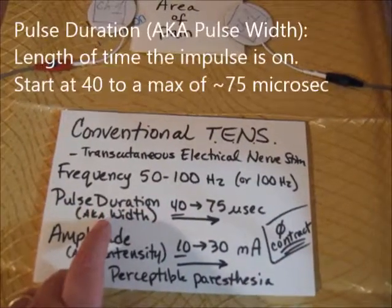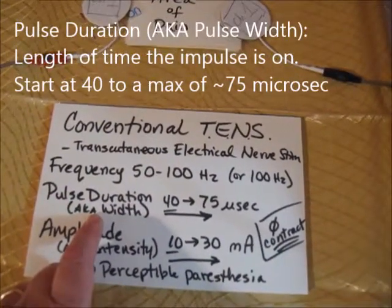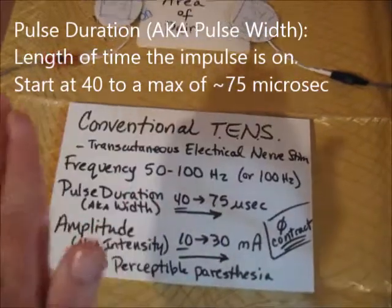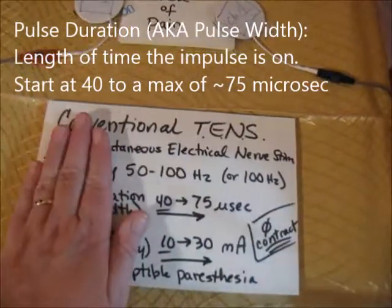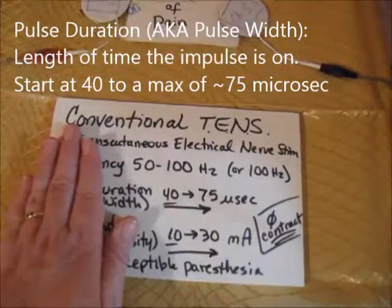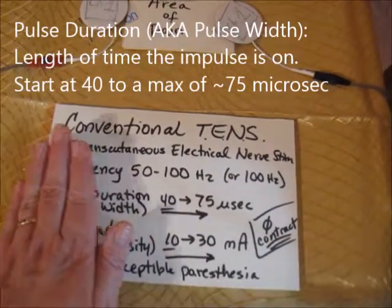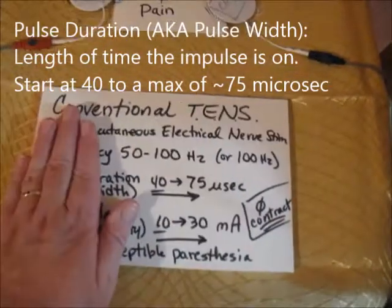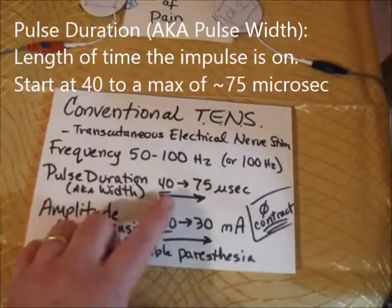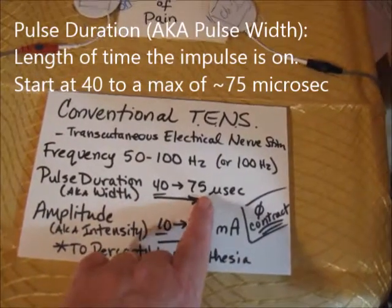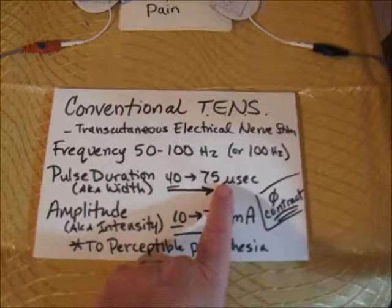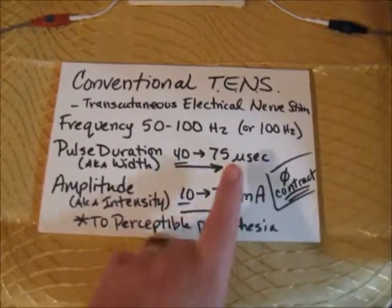Pulse duration is also called pulse width. It is the amount of time that the stimulus is applied — like how long a hand is on a hot stove. Every time the stim fires, is it there for 40 microseconds or 75 microseconds, which would be a lot more intense. Start low and go high, and try not to go above 75. Some machines increment by 10, so you may need to go to 80.